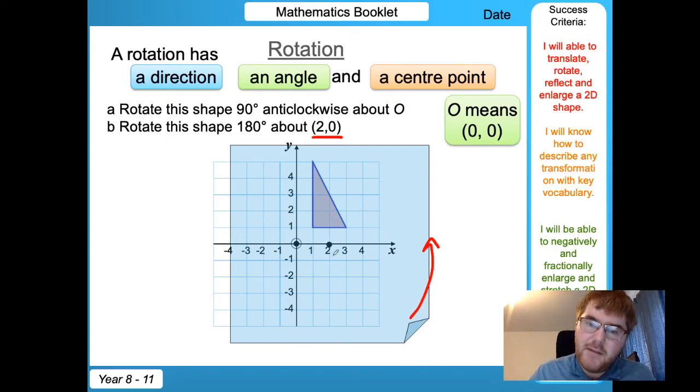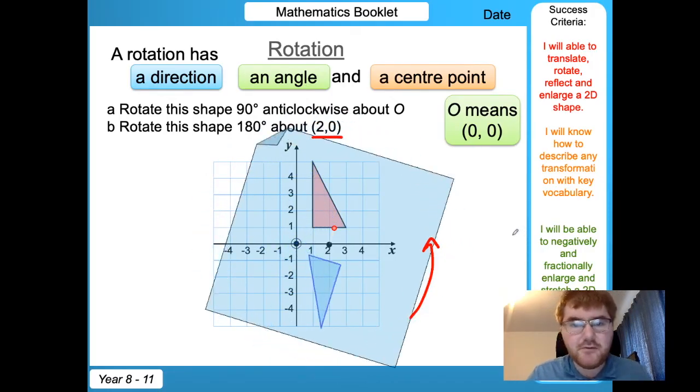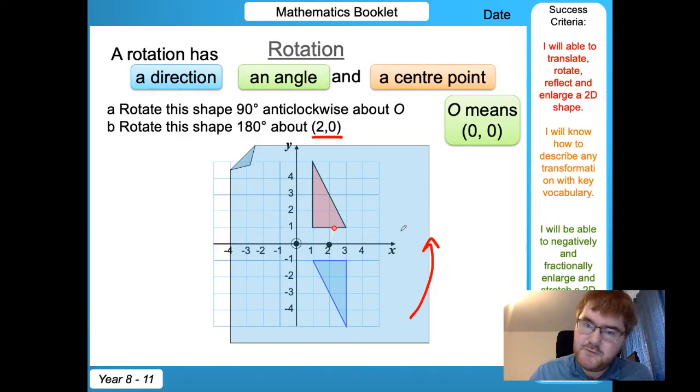we're going to put our pencil or our pin on (2,0), just like so, and this time we're rotating 180 degrees, so we want the corner of the paper to be over here. And if we do that process, we get the corner of the paper over here, two quadrants, and then we draw in our rotation like so.